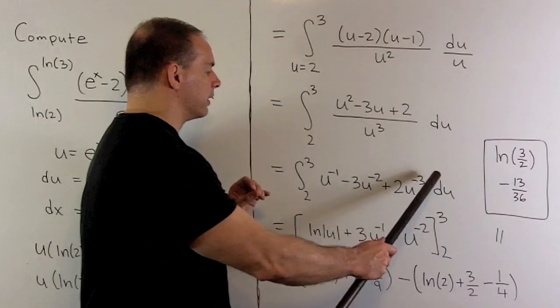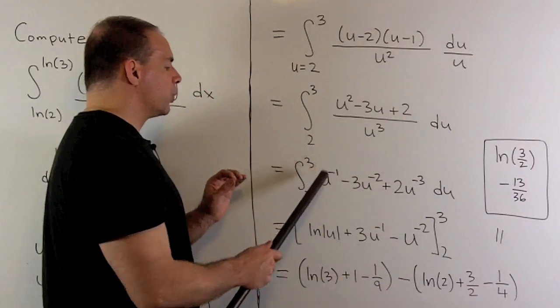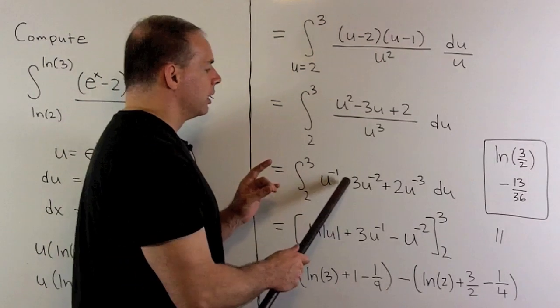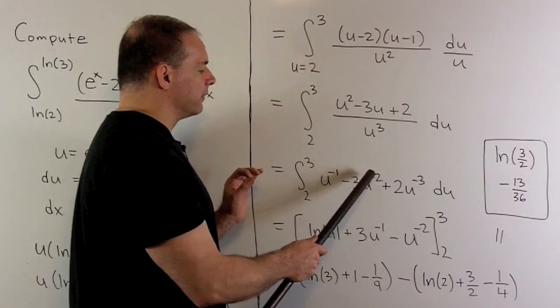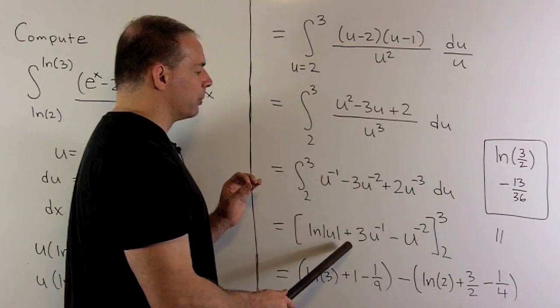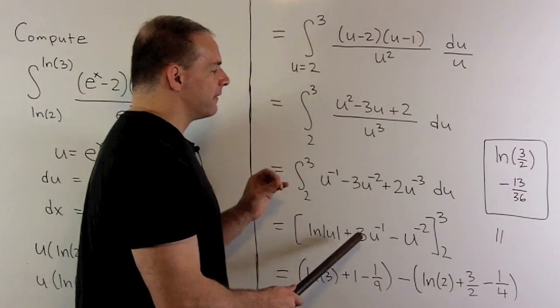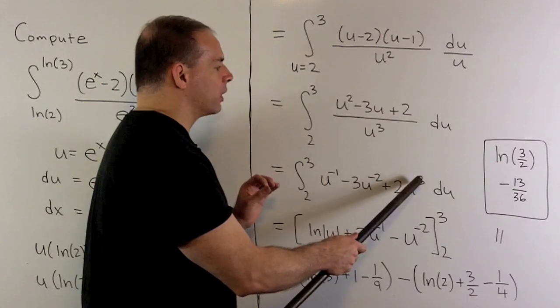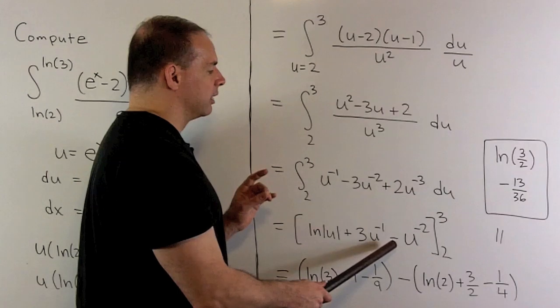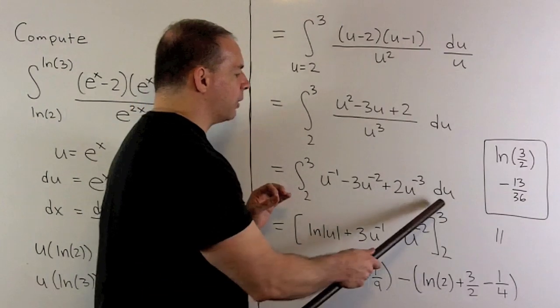Take the antiderivative. So u to the minus 1 goes to natural log of absolute value of u. Our term here, we're going to add 1 and flip it over. So the exponent becomes a minus 1. The minus sign goes to a plus. Then finally here, we add 1, flip it over. So I'll have a minus 2. Let's turn that into a minus sign. Then I evaluate at 3 and 2.